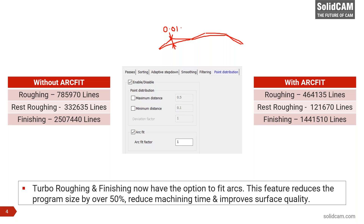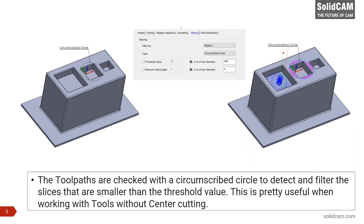Another improvement, although small, is the circumscribed circle feature. Toolpaths are checked against the circumscribed circle to detect and filter slices smaller than a threshold value. For example, instead of blocking a pocket by defining a boundary, you define a circumscribed circle value, and any toolpath slices falling within that circumscribed value are automatically deleted. Earlier this was based on just a diagonal length; now it has been improved to a circumscribed circle.